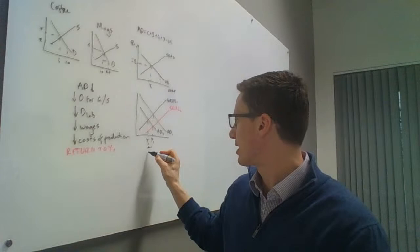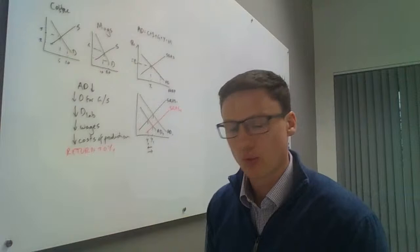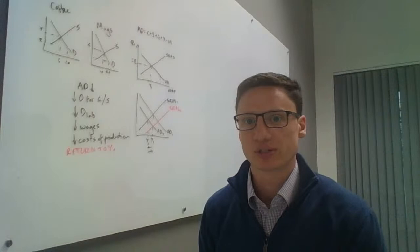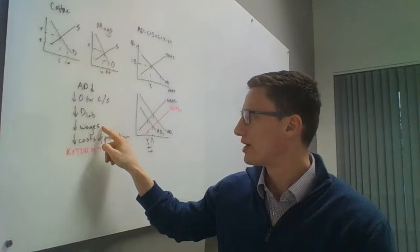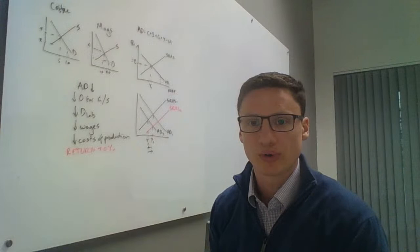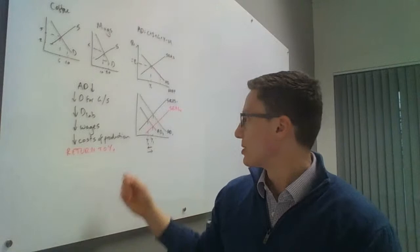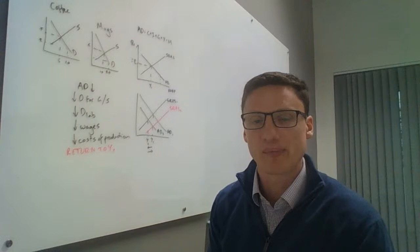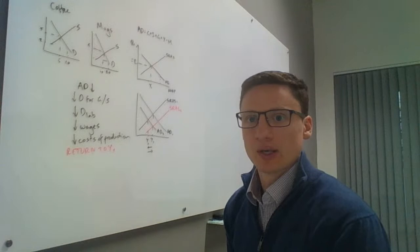This is the story you need to learn quite well: because of the self-stabilizing mechanism, we return to Y1 in the long run. You can apply the same logic in reverse during a boom: if aggregate demand shifts right, demand for goods and services goes up, demand for labor goes up, wages go up, costs of production go up, the supply curve shifts left on both the micro and macro diagram, and you again return to Y1 — this time correcting a positive output gap.